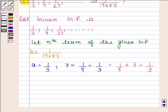We know that the general term of a geometric progression is given by Tn is equal to A into R to the power n minus 1.